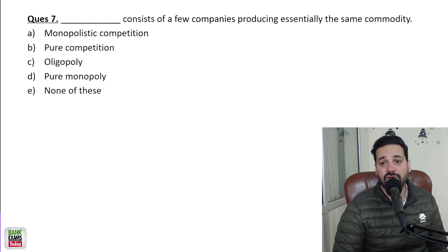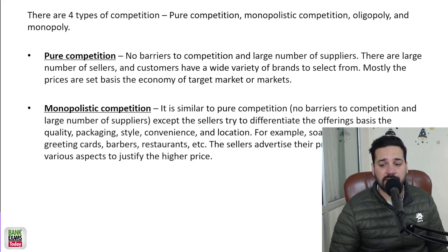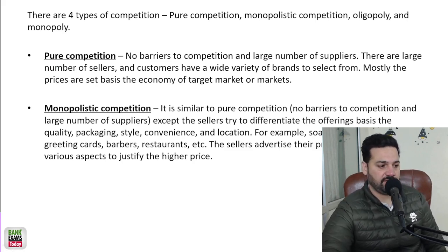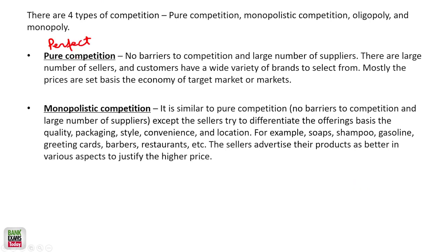Let me explain the four types of competition in the market. Pure competition, also known as perfect competition; monopolistic competition; oligopoly; and monopoly. In perfect competition there is no barrier to entry and a large number of suppliers are there. A good example is the wheat market — farmers selling wheat at the grain market. They are price takers; they do not decide the price themselves. Large numbers of sellers and customers are there.